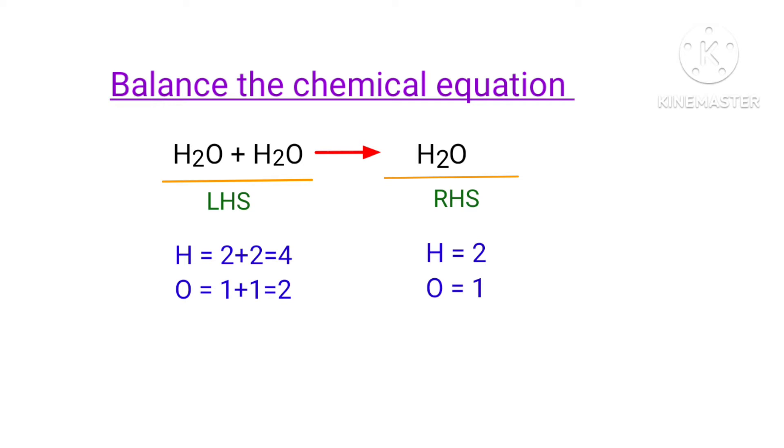The number of atoms are not balanced on both sides. To balance the chemical equation, we need to make use of coefficients. A coefficient is a number that we place in front of a chemical formula.